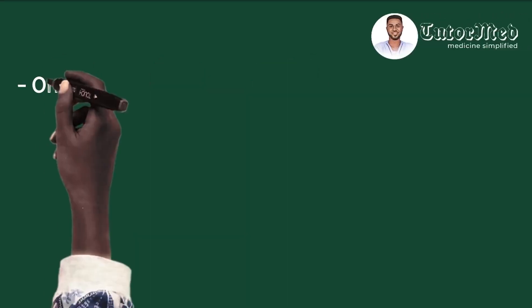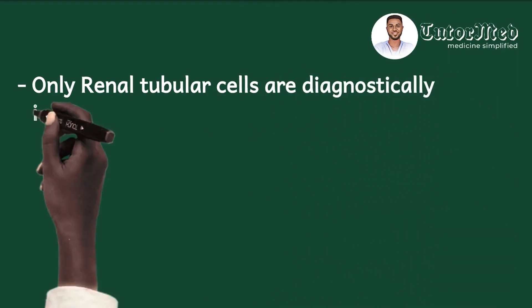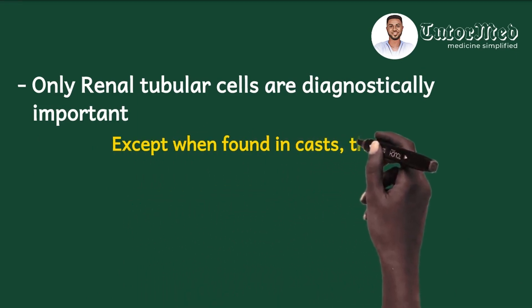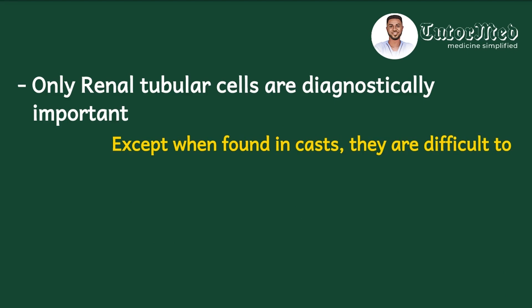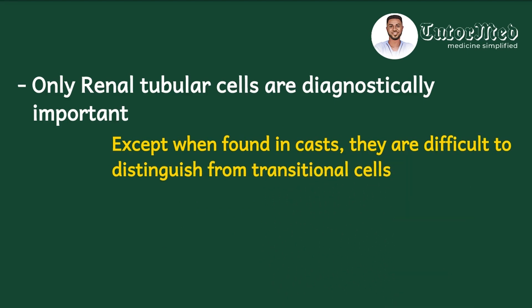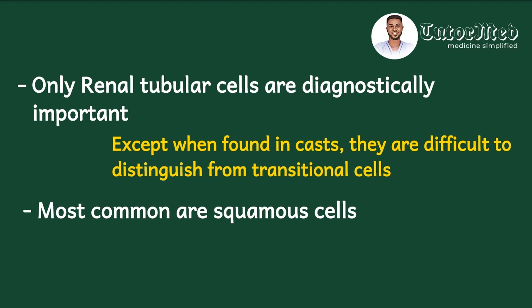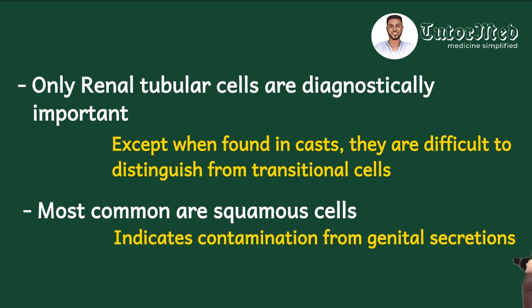Of these three cell types, only the renal tubular cells are diagnostically important — they indicate acute tubular necrosis — except when found in casts, where they are very difficult to distinguish from transitional cells. Most commonly it is squamous cells that are seen in urine, and when present they indicate contamination from genital secretions. This is why it is important that the patient cleans the external urethral meatus and provides a midstream urine sample to avoid this contamination.